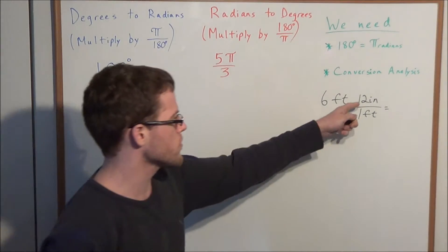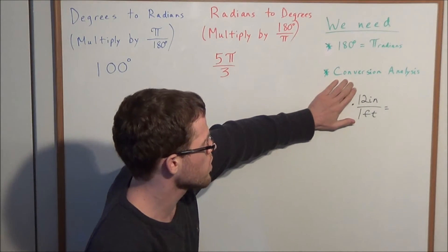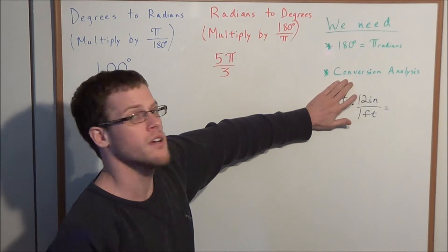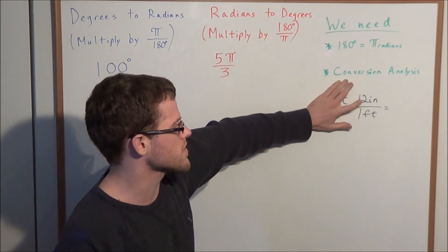Keeping in mind that 12 inches equals 1 foot, so we're really just multiplying by 1, since in the numerator and denominator we have the same quantity.